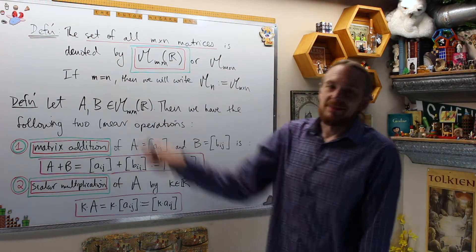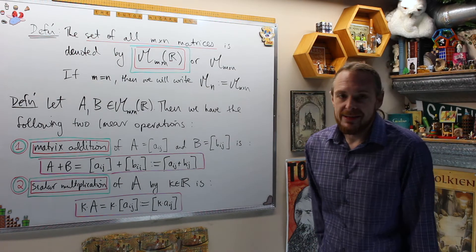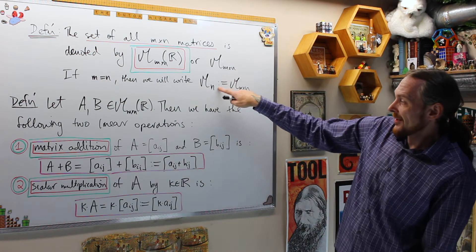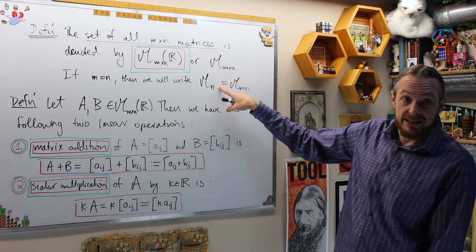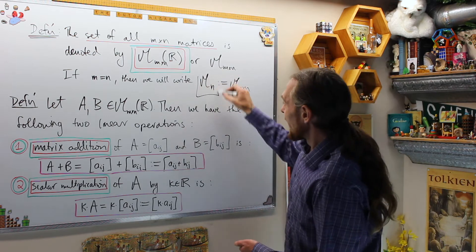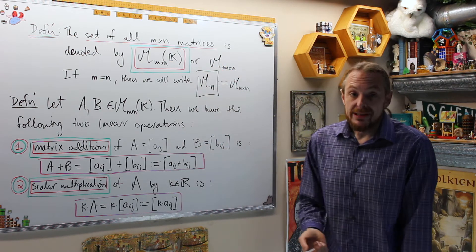In particular we're going to talk about square matrices in a lot of the problems. So if m equals n, then we write M_n is the set of all n by n matrices.